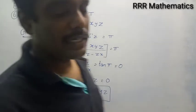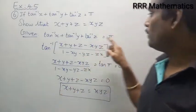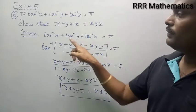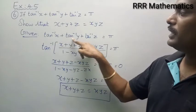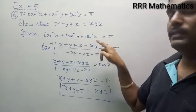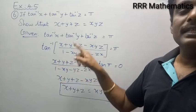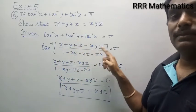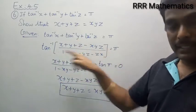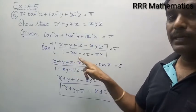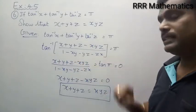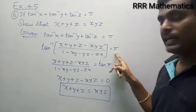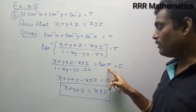Tan inverse x plus tan inverse y plus tan inverse z equals 180 degrees is given. We have a result for tan inverse x plus tan inverse y plus tan inverse z as tan inverse of (x plus y plus z minus xyz) divided by (1 minus xy minus yz minus zx). When this tan inverse equals 180 degrees, we apply tan on both sides. What is tan 180 degrees?